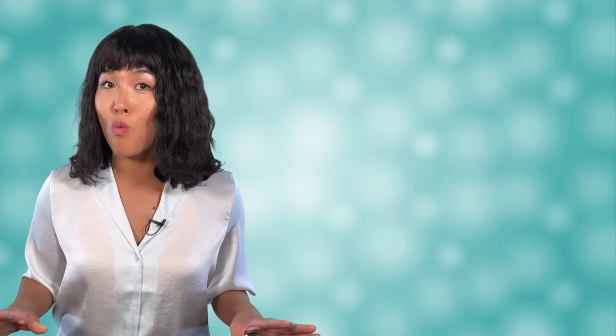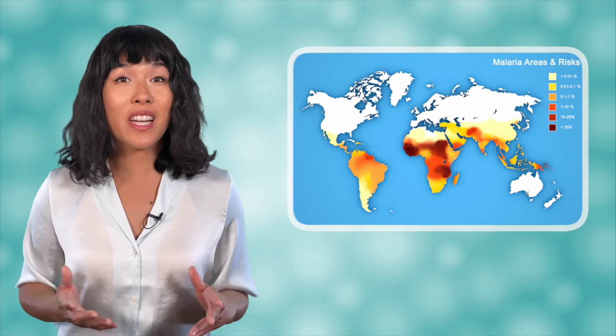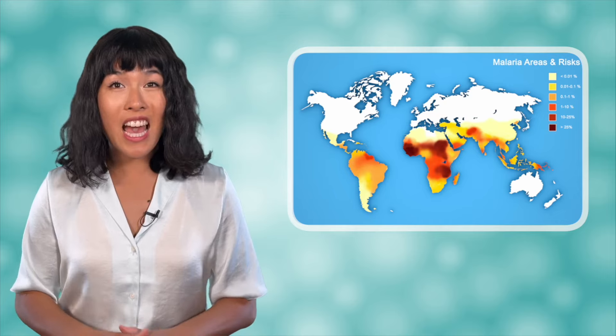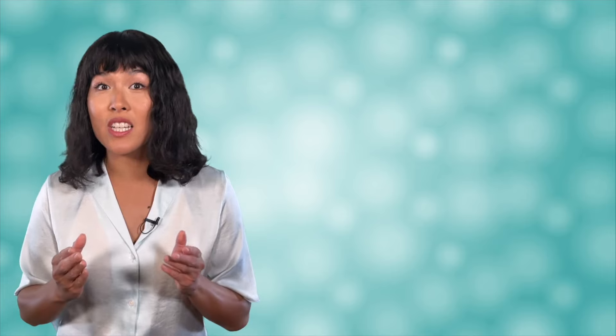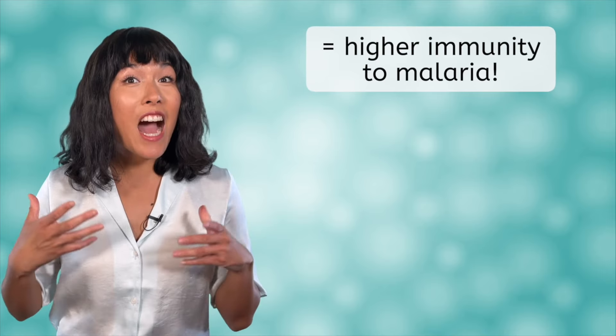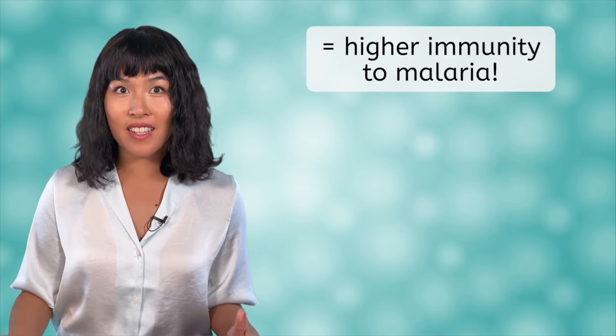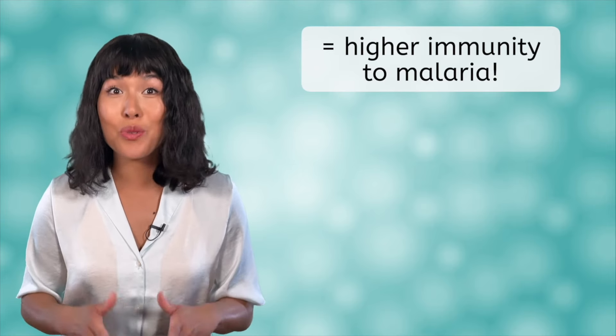Strangely enough though, it was found that the sickle cell allele was almost completely absent in most parts of the world except places where malaria is commonly spread. Malaria is a serious disease caused by a parasite and often spread through mosquito bites. It became known that those with the middle condition of sickle cell, having one sickle cell allele and one allele without, had significantly higher immunity to malaria. That's probably why the allele stuck around in those populations. It was actually an adaptation. But only if you get exactly one sickle cell allele, not two.